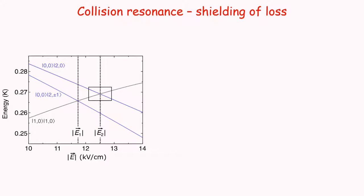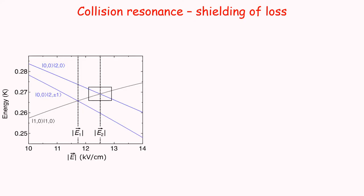As we were rotating the electric field, we came upon an interesting effect — a collisional resonance. This is not a Feshbach resonance; it's more like a Förster resonance in Rydberg physics. If you prepare two molecules in rotational excited state |1,0⟩ and two molecules come together and collide, under different electrical field, at a certain electrical field, the two rotational excited state molecules will come across as energy degenerate with one molecule at |0,0⟩ and the other one at |2,0⟩ or |2,±1⟩ — these are different rotational angular momentum projections.